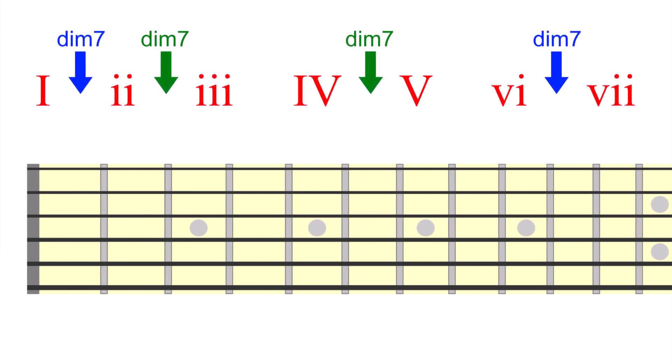So, the diminished 7th chord tends to act as a passing link between chords in a key. Here's an example of taking this concept to its extreme, in the key of B major.